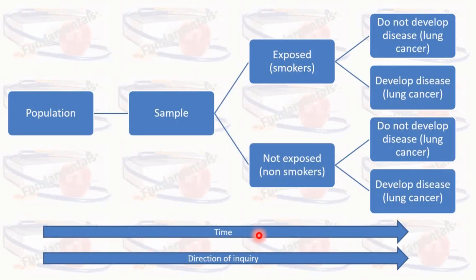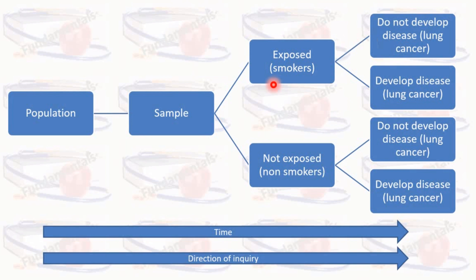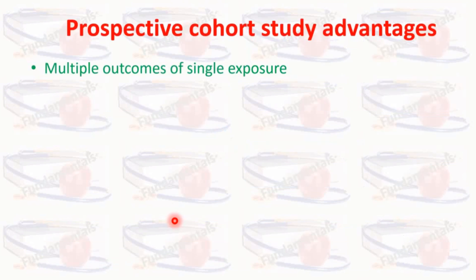Time is in the forward direction and the direction of inquiry is also in the forward direction. Advantages of prospective cohort study are that multiple outcomes from a single exposure can be detected — for example, in the case of smoking, a researcher can see other diseases in addition to lung cancer.